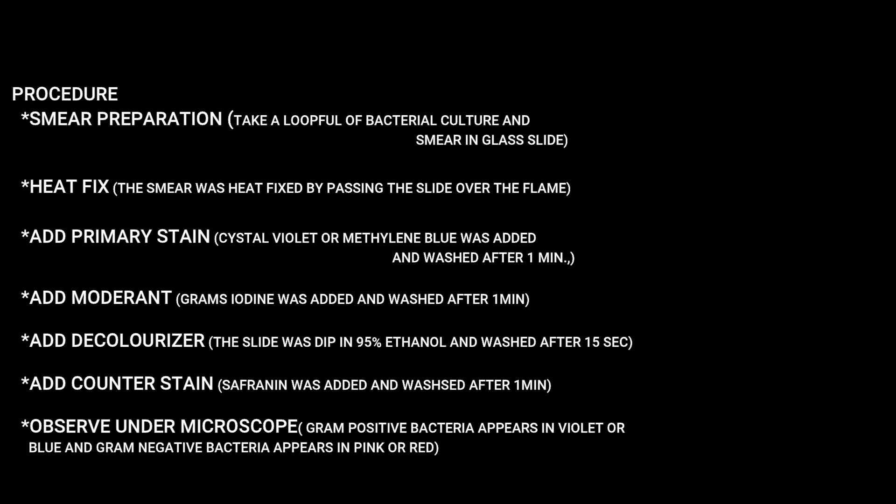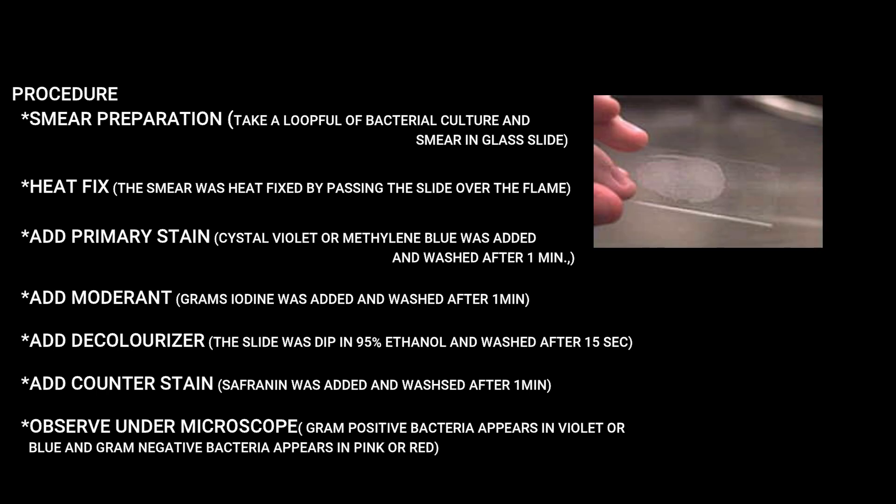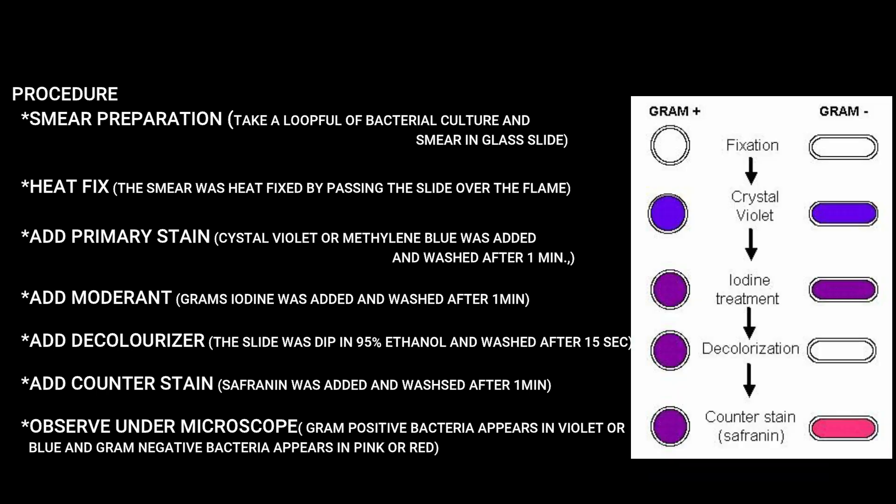Gram staining procedure involves four steps: primary stain, mordant, decolorizer, and counter stain. First, heat fix. Then add primary stain — crystal violet or methylene blue. Gram-positive bacteria will turn blue or violet. Add primary stain, wait one minute, then wash. Next, add mordant — Gram's iodine — wait one minute, then wash. The mordant fixes the primary stain.